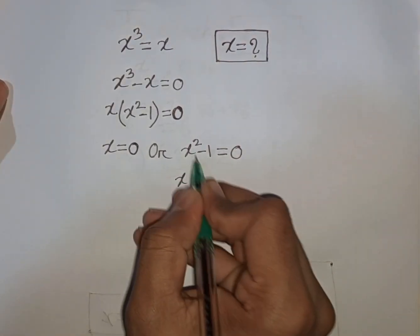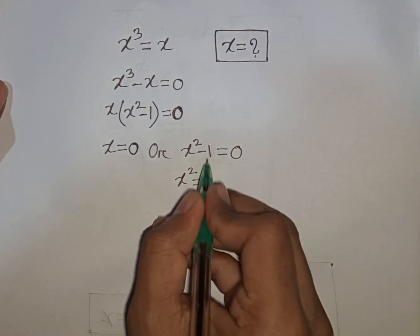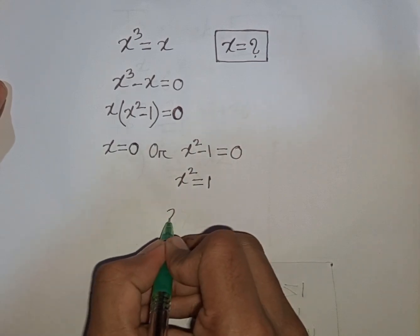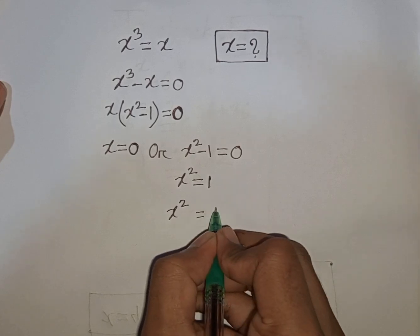We have x square, then is equal to this minus 1 take to the right side. So this will be plus 1. We have x square is equal to 1.